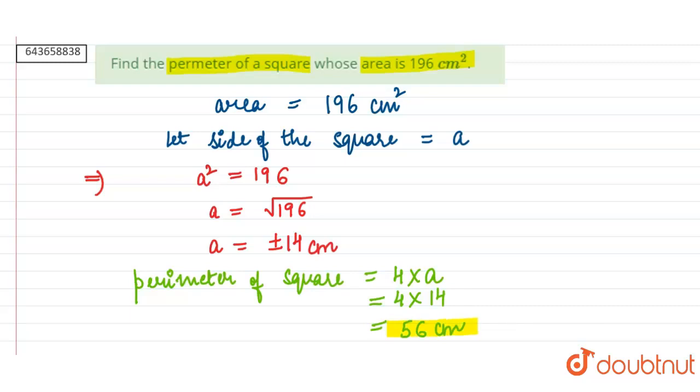Here we can note that we didn't take the negative value of A because the side cannot be negative.